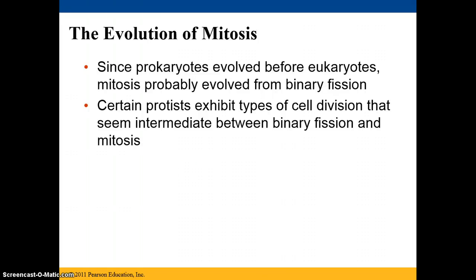Let's continue with our discussion of mitosis, and we need to talk about its evolutionary history. We can assume that since prokaryotes evolved before eukaryotes, mitosis probably evolved from binary fission.